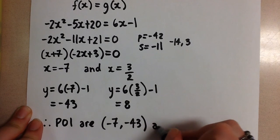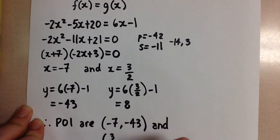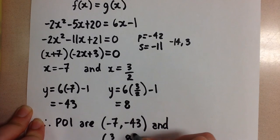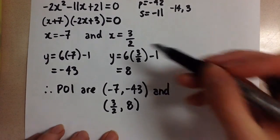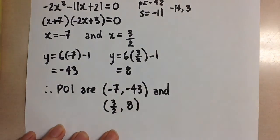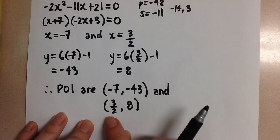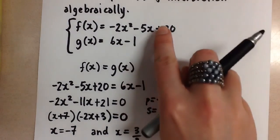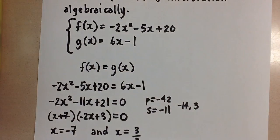And the second point of intersection will be 3 over 2 and 8. So if we wanted to, we could do a check. Take these x values and plug them into both equations and we should get the corresponding y values if we've done it correctly.